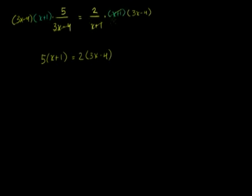But the reality is we didn't do anything new — we just multiplied both sides by each expression. Now we just have a straight-up linear equation. The left-hand side becomes 5x plus 5, and the right-hand side becomes 6x minus 8.